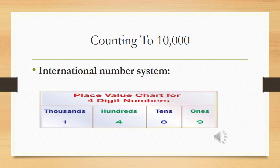So we prefer to understand the international number system. If I am writing a number, a number includes many digits, as you all know. If I am writing the number 1, 4, 8, 9, it has its own name. Like there are so many students in a class, but every student has their own name, identity, and place in the class — some are intelligent, some are average, some are slow learners, some are tall, some are short. They are categorized like that.